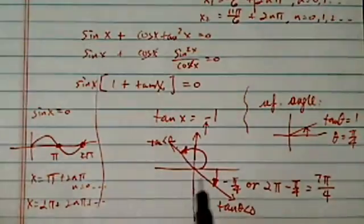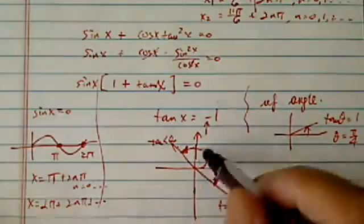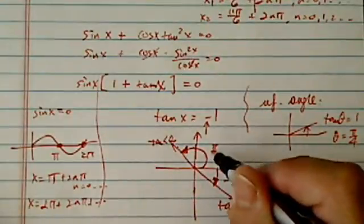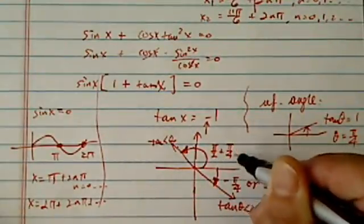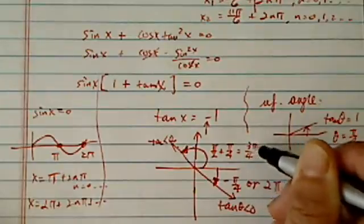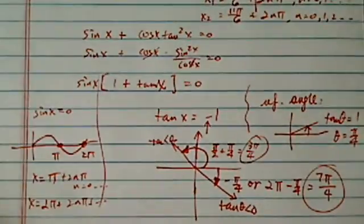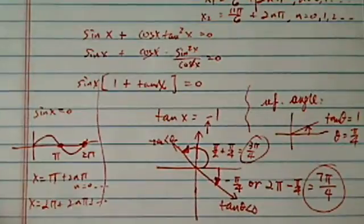So for this angle, it's really pi over 2 plus pi over 4, which is 3 pi over 4. Okay, so that's the two solutions. All right, I hope this is clear. This is how we solve this type of problem.